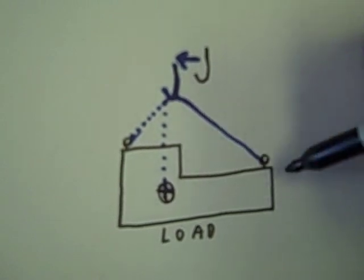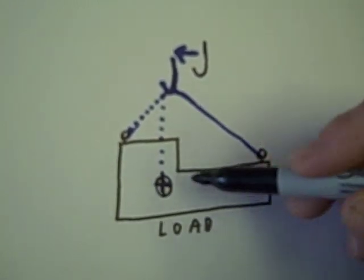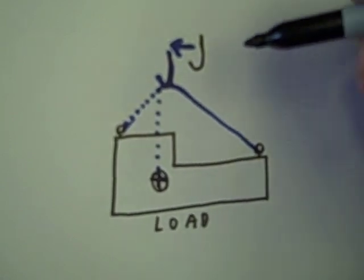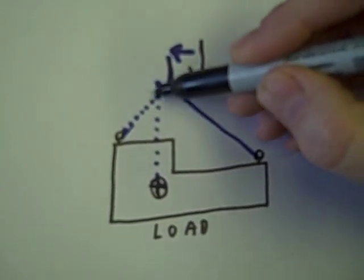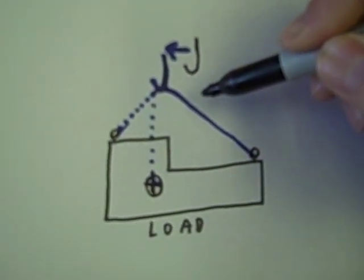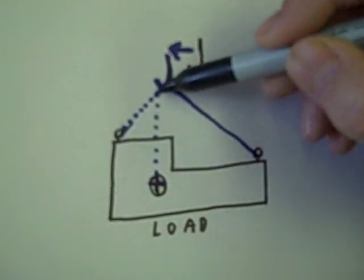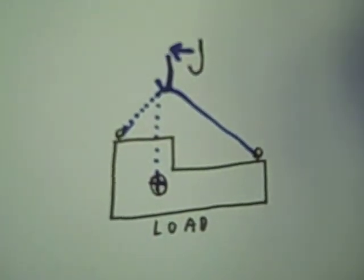If one load end lifts before the other one, which way do we need to move the hook? Toward the end that did not raise from the ground first. Usually that means shortening that side connection of that sling.